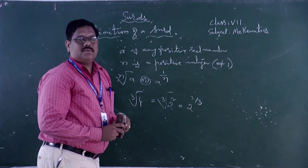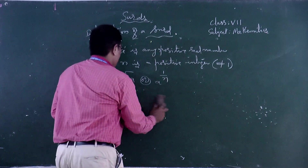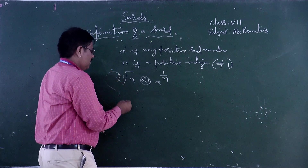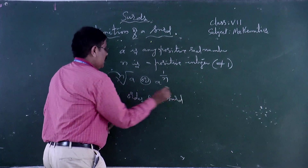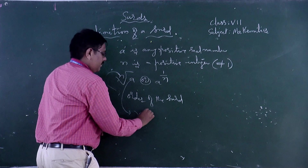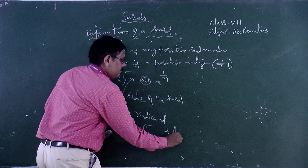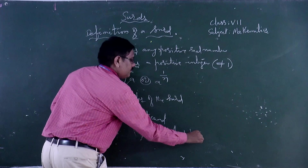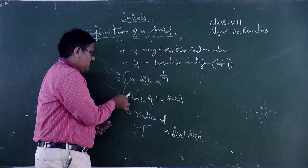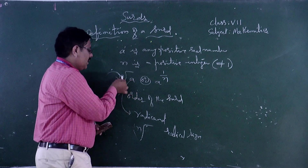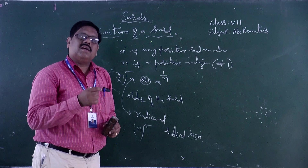Now we will see a few problems and a few more terms related to the surd. In N root A, N is called the order of the surd, A is called the radicand, and the N root symbol is called the radical sign. The other name for a surd is radical — we can call a surd a radical as well.